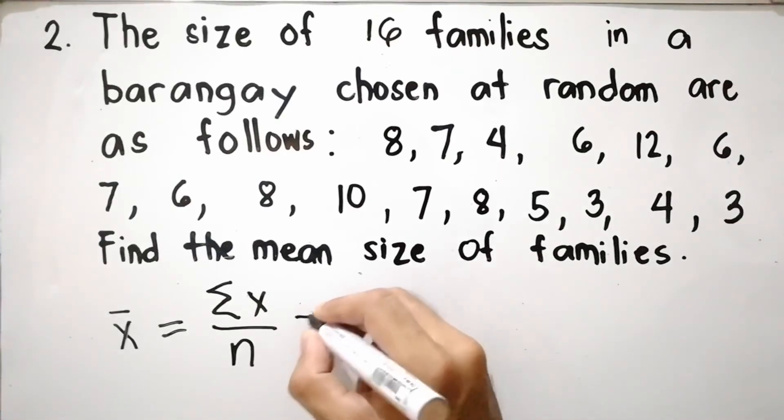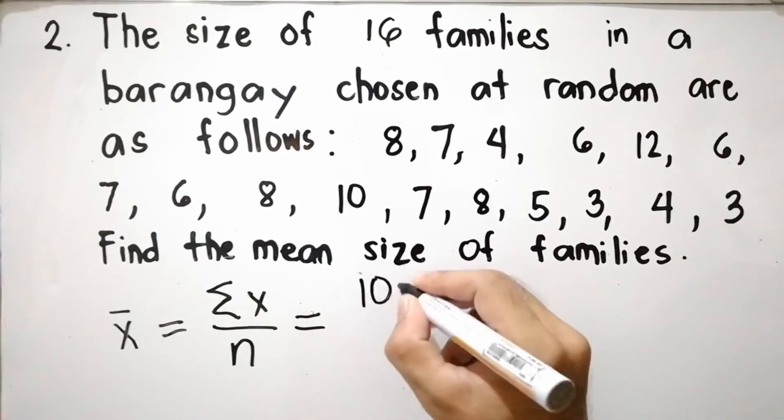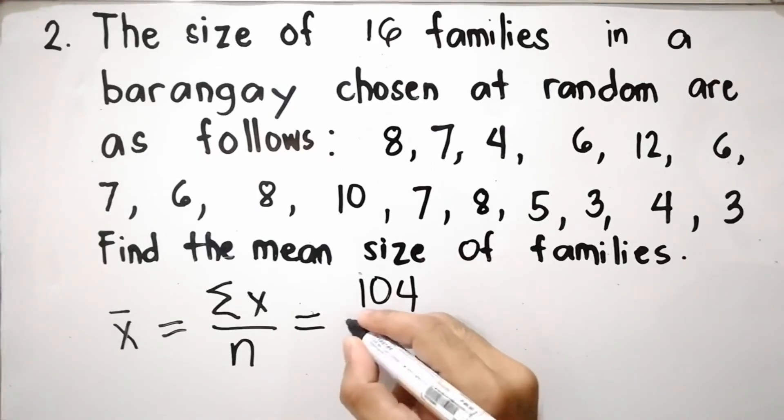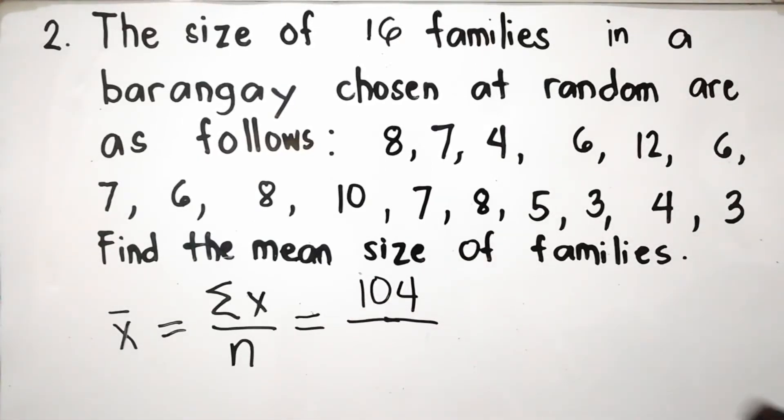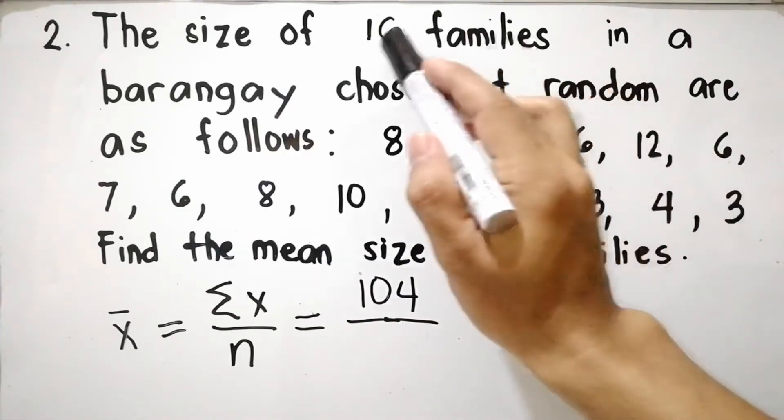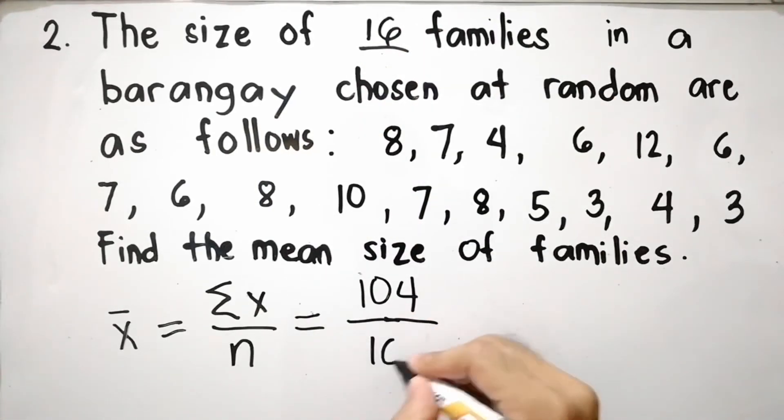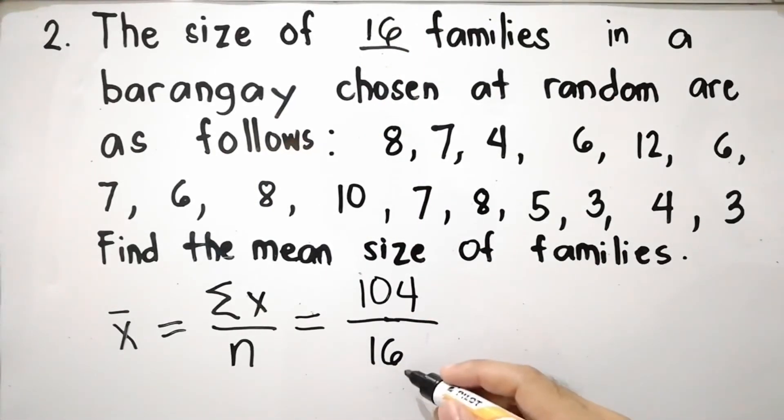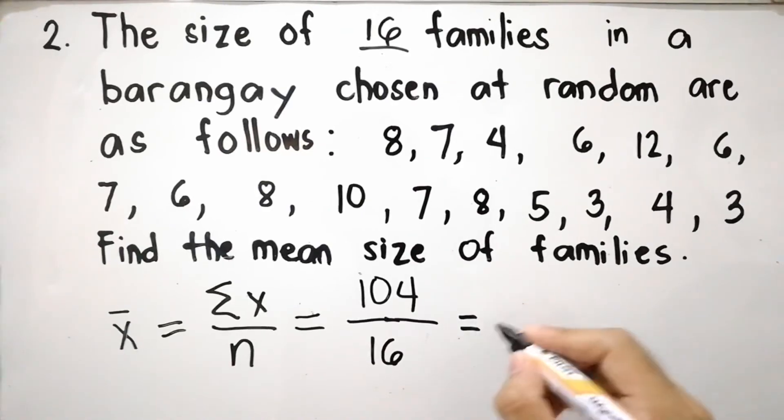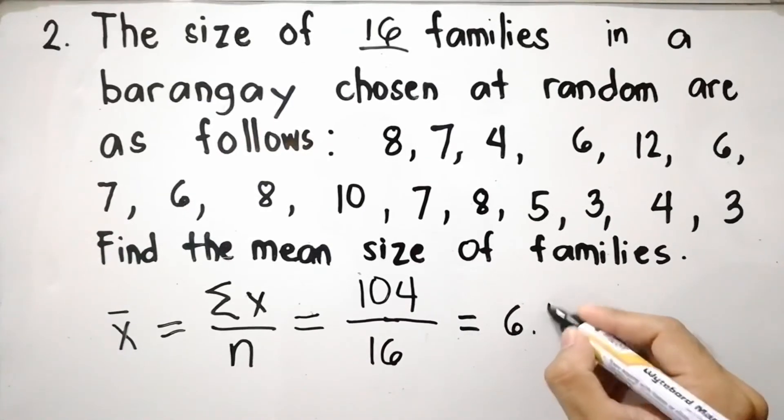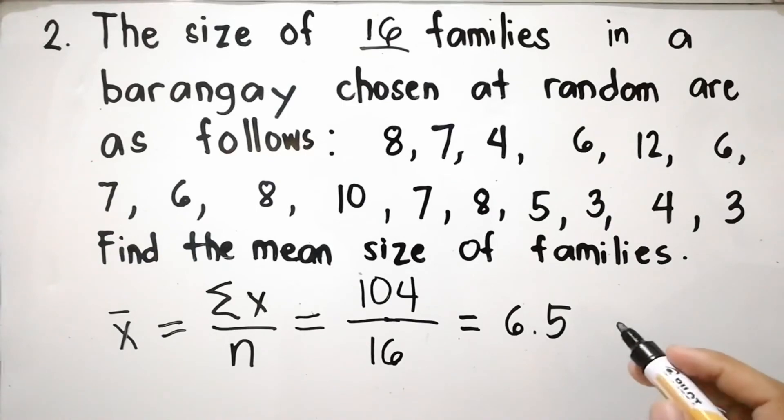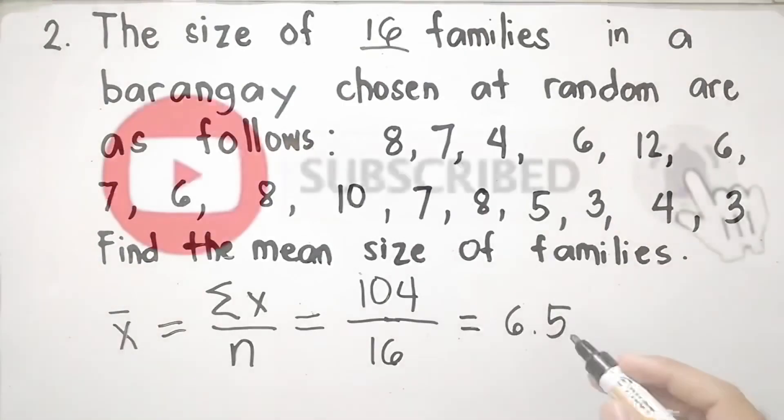Summation of x is 104 divided by n. N is the number of families. If we're going to count the size of the families, we have 16. n is 16. 104 divided by 16, we have 6.5. The average size of the families is 6.5.